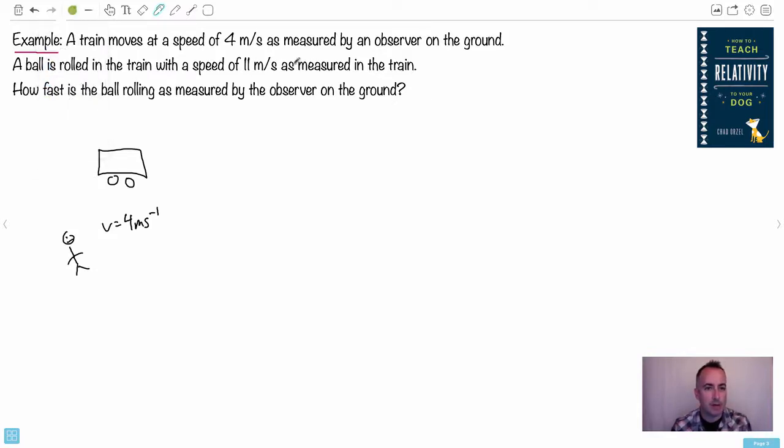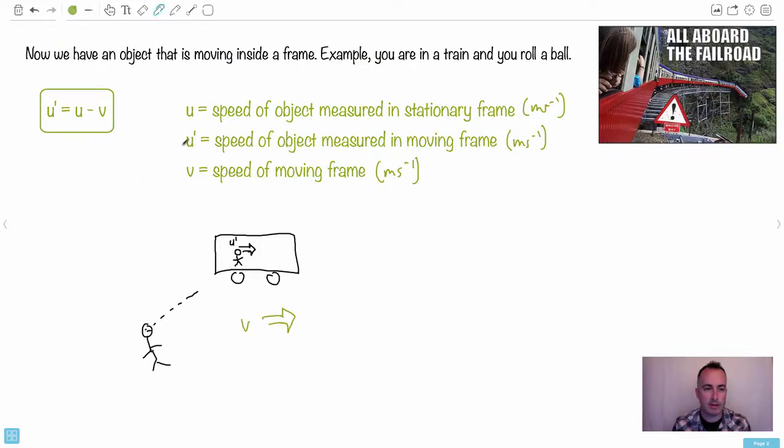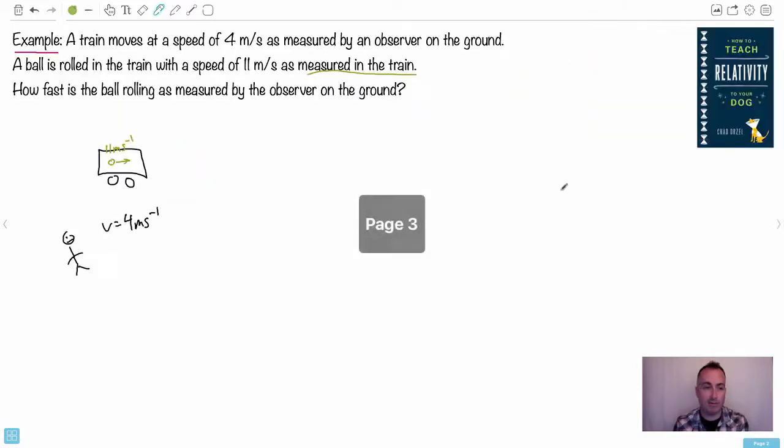Now a ball is rolled in the train with a speed of 11 meters per second, as measured in the train. What do we mean by that? We mean within the train's frame of reference. Like in that movie with Val Kilmer, maybe he would throw a ball at 11 meters per second. So you move it at 11 meters per second. What letter is that? That would be U prime, because that's the speed of the object measured in the moving frame. The big key to doing relativity is taking your time and thinking who's measuring what.